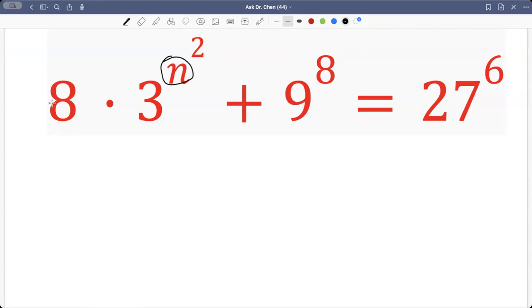So the first term we have 8 multiplied by 3 raised by n squared, so base is 3. The second term we have 9 raised by 8, well 9 is 3 squared, then raised by 8.